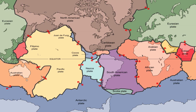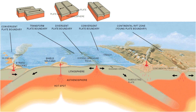We now know that the Earth is made up of seven different tectonic plates. Where a tectonic plate meets another tectonic plate, these are tectonic plate boundaries, and there are different types depending on the movement. At these plate boundaries is where you'll find most of the Earth's volcanic activity, as well as most of the Earth's earthquake activity.